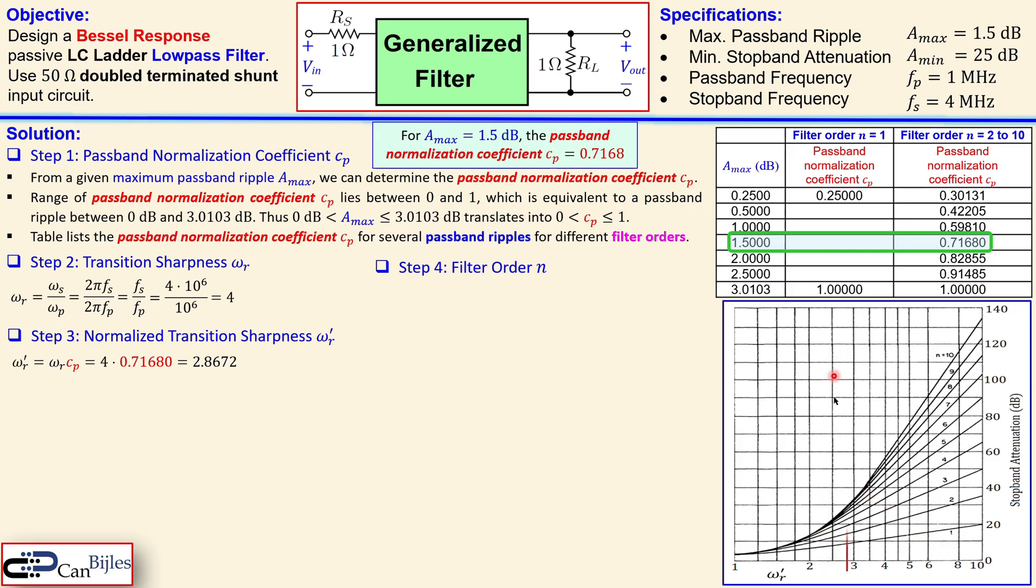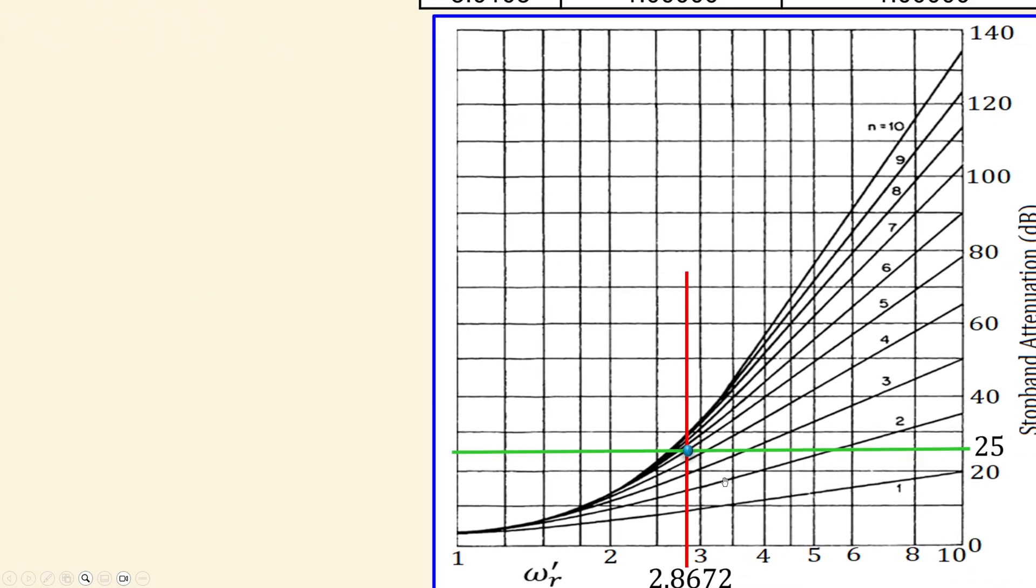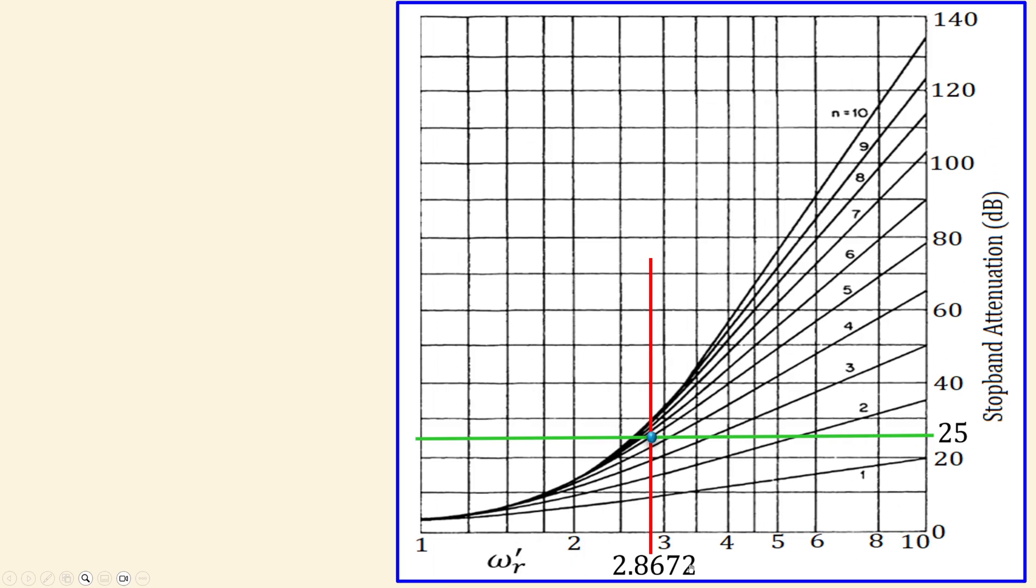So it must be an intersection between our 2.8672 and the 25 dB we wanted for our minimum stopband attenuation and that intersection here is shown here. If I now zoom in a little bit and then move on to this a little bit closer you can see again this is the stopband attenuation, this is the normalized transition sharpness, you can see this approximately 2.8672 and this is now 25 and this is the intersection and you see this line here which is actually our fifth order so we need a fifth order Bessel response filter.